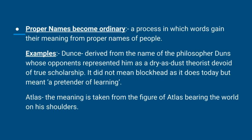The next process is interesting — it is the process in which proper nouns, that is proper names, become ordinary words. Words gain their meaning from proper names of people. For example, the word 'dunce' — it is derived from the name of the philosopher Duns Scotus, whose opponents used to represent him as a dry-as-dust theorist devoid of true scholarship. So 'dunce' originally meant a pretender of learning, but now it means a blockhead.